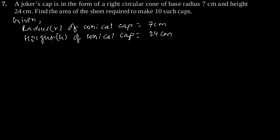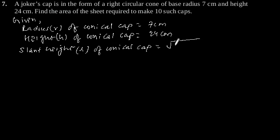The slant height L of conical cap will be square root of r squared plus h squared. Putting the value of r and h, you get square root of 7 squared plus 24 squared, which equals square root of 625. Therefore, slant height L equals 25 cm.